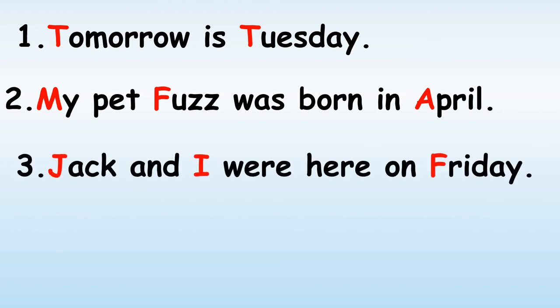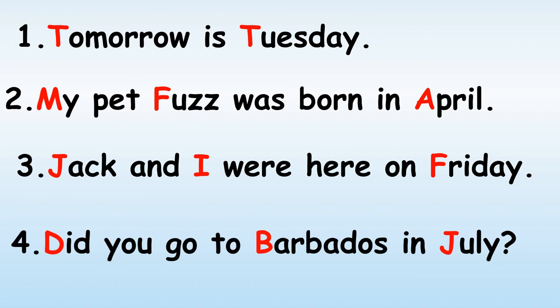Jack and I were here on Friday — Jack begins the sentence and is also the special name of a person. Then we have I, and Friday which is a day of the week. Did you go to Barbados in July? That is a question, so we begin with capital D for 'did.' Barbados is the special name given to a place, and July is a month of the year.